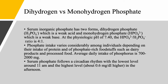Phosphate intake varies considerably among individuals and really follows protein intake — if someone's protein intake is high, their phosphate intake will be high. Foods rich in phosphate include dairy products and processed food. The average daily intake is anywhere between 700 to 2,000 mg per day, reflecting wide variation among individuals. Serum phosphate follows a circadian rhythm: the lowest level is around 11 a.m., the highest level is in the afternoon, and the difference is about 0.6 mg per deciliter.